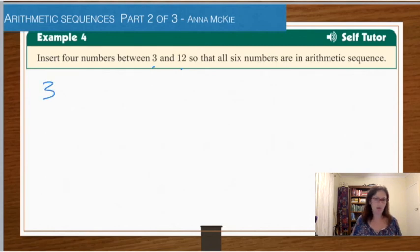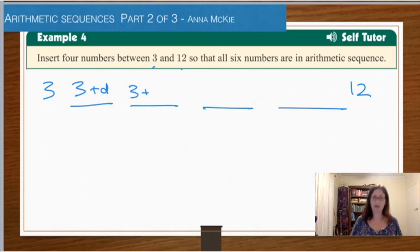I would write something out like this. You've got three and twelve. And there's going to be six numbers all up. So that must mean there must be four in the middle. How are we going to get from three to the next number, to the next, to the next? We've got the number three plus some lot of the difference. The next one, three plus some more difference.